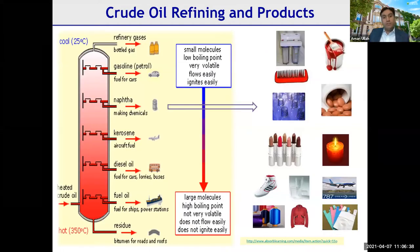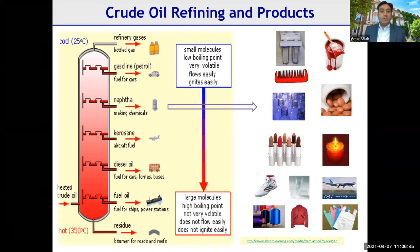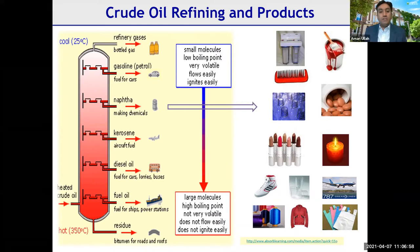We take these resources, refine them, and produce different types of materials — from refinery gas and fuel oil for ships, to a small fraction called naphtha, which is used for making plastics, cosmetics, clothing, and similar applications.